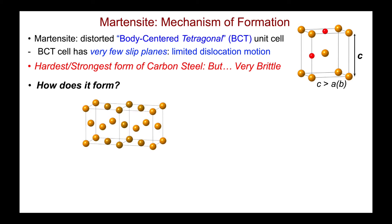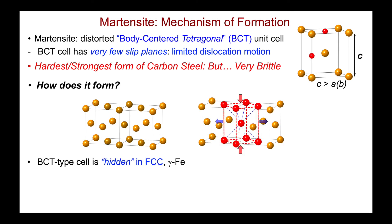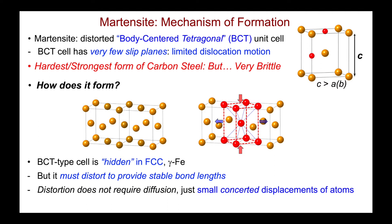Let us take a closer look at the formation mechanism of martensite. When we look at the FCC structure, it's not immediately apparent how it could quickly transform to the BCT arrangement. A clue to figuring out the transition came from the recognition that a BCT type cell was actually hidden in the FCC structure, as shown by the atoms shaded in red. Distortions of the hidden cell are required to provide stable bond lengths for iron and carbon, but distortions do not require diffusion — just small atom displacements. This is consistent with the martensitic transition only being observed in samples that were very rapidly quenched, as such a displacement transition would be very fast.